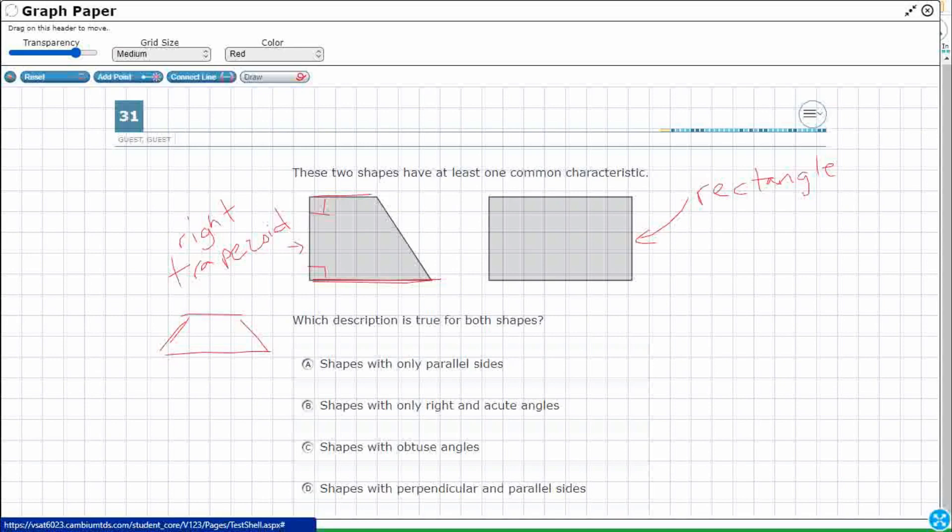So let's take a look at these descriptions here and see which one works best for both. Shapes with only parallel sides. Okay, only. So parallel is, it's always easy for me to remember parallel because I'm going to change colors here to kind of show the difference here. Think of these two L's in parallel. Those two L's in parallel are parallel because they are straight in the same distance apart and they never touch.